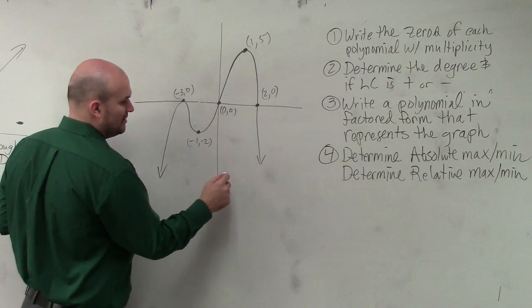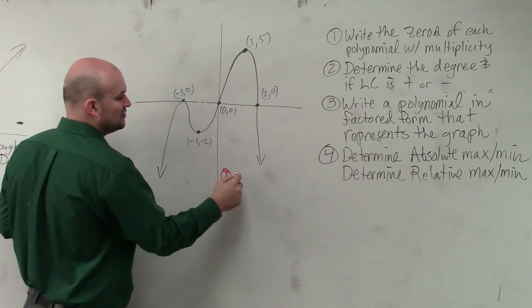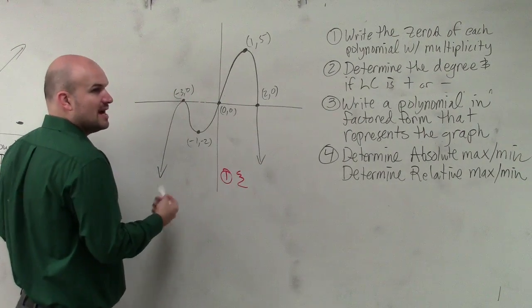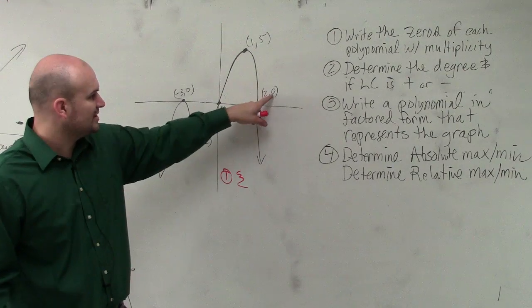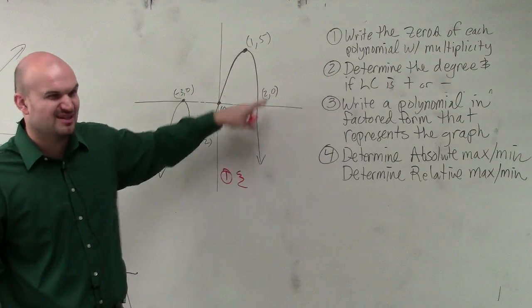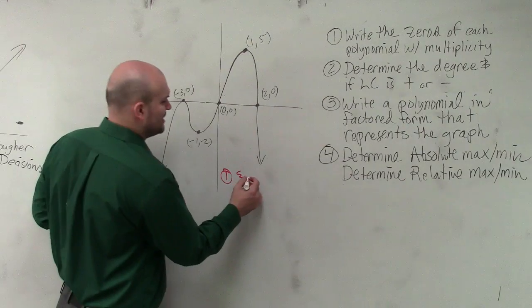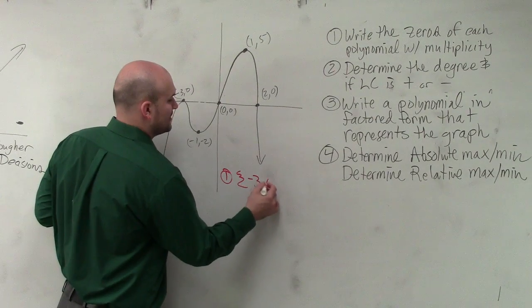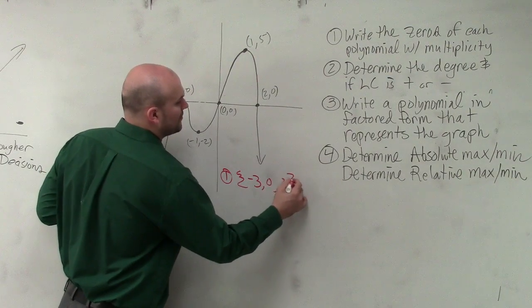So for number one, I'm just going to write a solution set of all my zeros. I don't care about the y-coordinate because the y-coordinate is always zero, right? So I just care about the x-coordinate. So that's negative 3, 0, and 2.